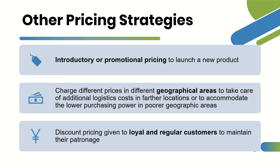For example, Potato Corner — in the province, it's cheaper, around 90 pesos. Here in Manila, it's around 110 to 115. They adjust based on the customer profile in each area. The third strategy is discount pricing — given to loyal and regular customers to maintain their patronage. It's about having that relationship with your customers. You need to be good to the people who support you.